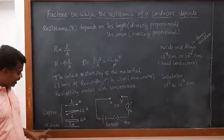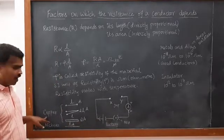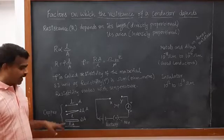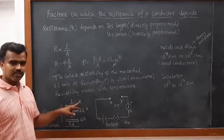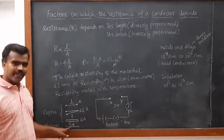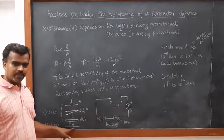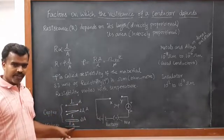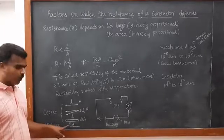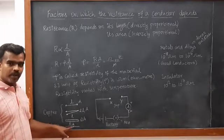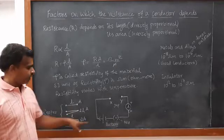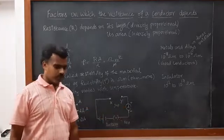In the fourth case, we change the material. Instead of copper wire, we use nichrome wire with the same dimensions — 1 meter length and 1 meter squared area — the same as used in the first copper wire case. We connect it and note the ammeter value.